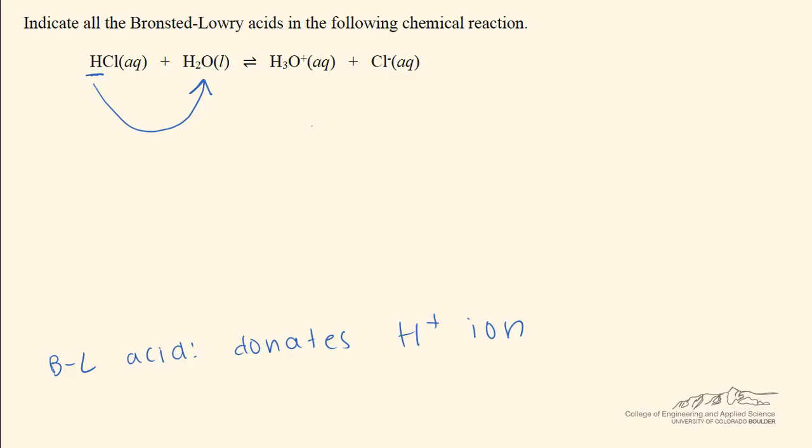If you don't know that HCl is a strong acid, you can see based on our equation that it must have donated hydrogen because we're left with a chloride ion on the right-hand side.